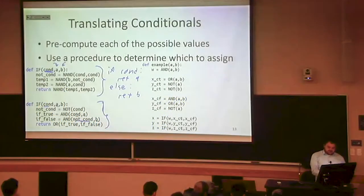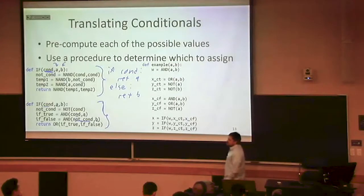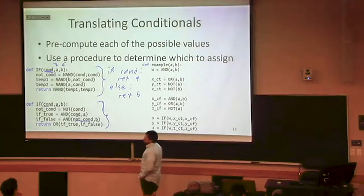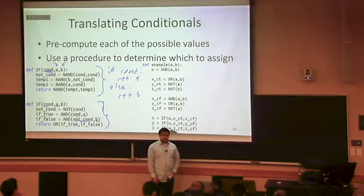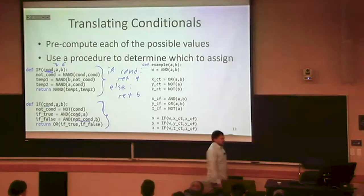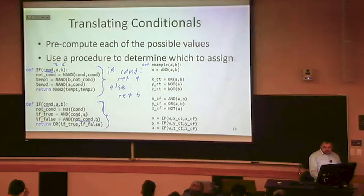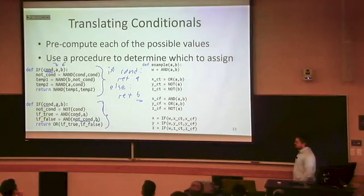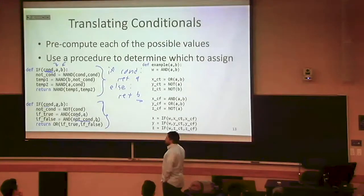If the condition is true, then whatever a happens to be is going to be the result. So the only way where the condition is true and we return true is when a was true. On the other hand, if the condition was false, then we return whatever happens to be the value of b — so we return true when b is true and false when b was false.